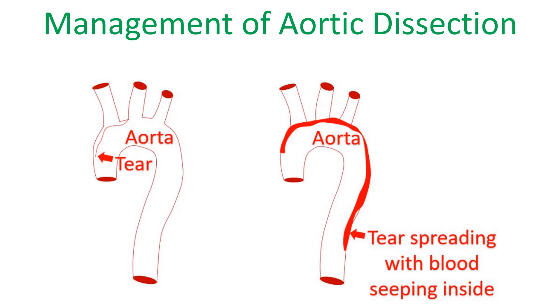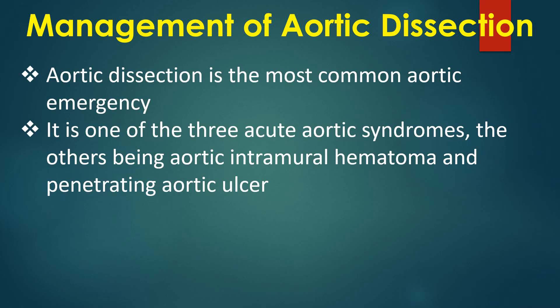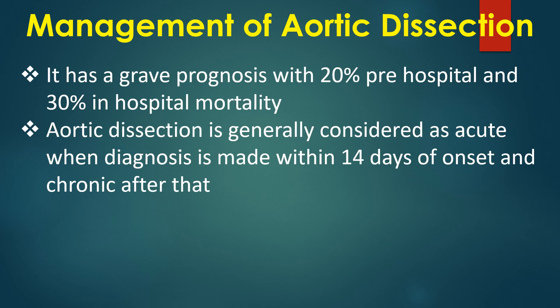Aortic dissection is the most common aortic emergency and one of the three acute aortic syndromes, the others being aortic intramural hematoma and penetrating aortic ulcer. It carries a grave prognosis with 20% pre-hospital and 30% in-hospital mortality. Aortic dissection is generally considered acute when diagnosed within 14 days of onset, and chronic after that.